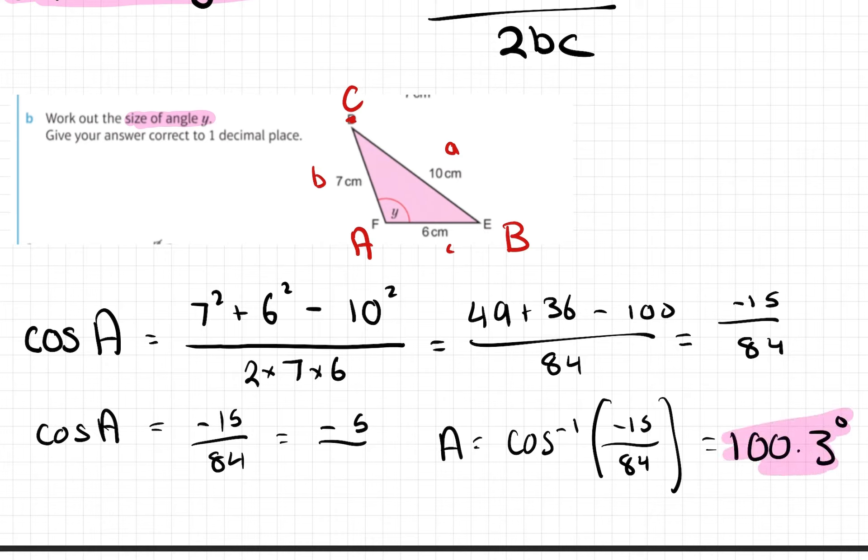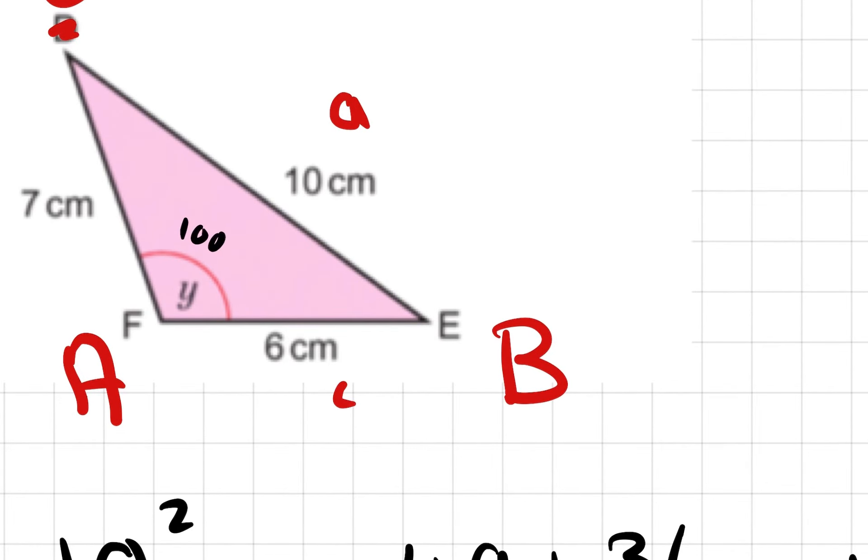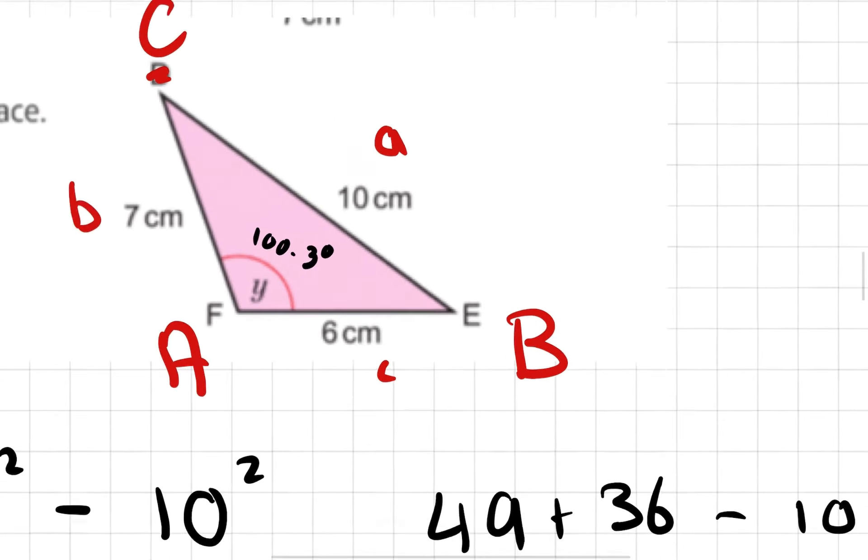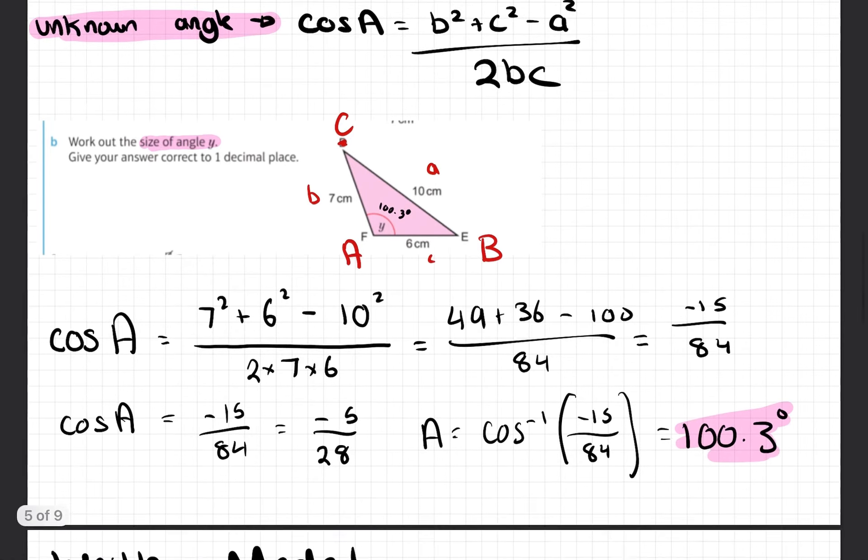There you are, the missing angle is 103 degrees. Take that all in, give it a read. This angle here is 100.3 degrees to one decimal place. Take a moment, copy it down or process it.